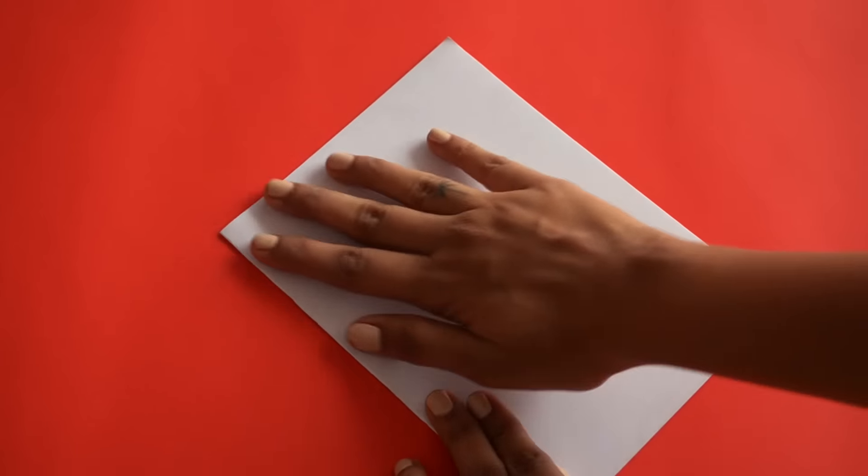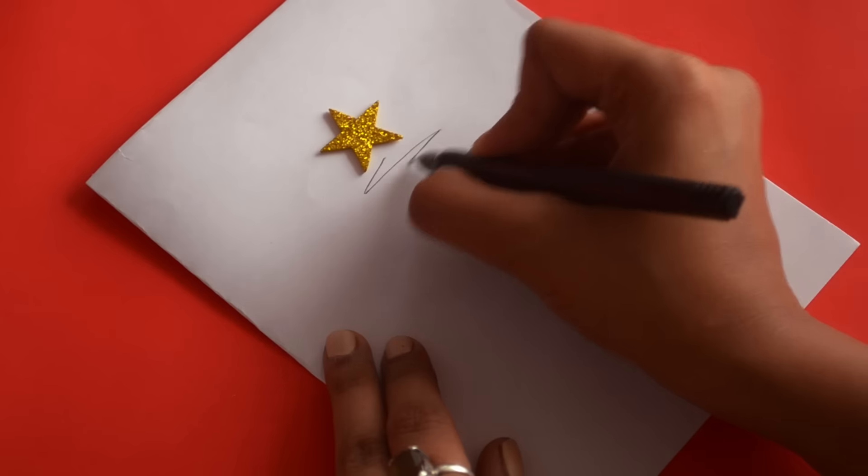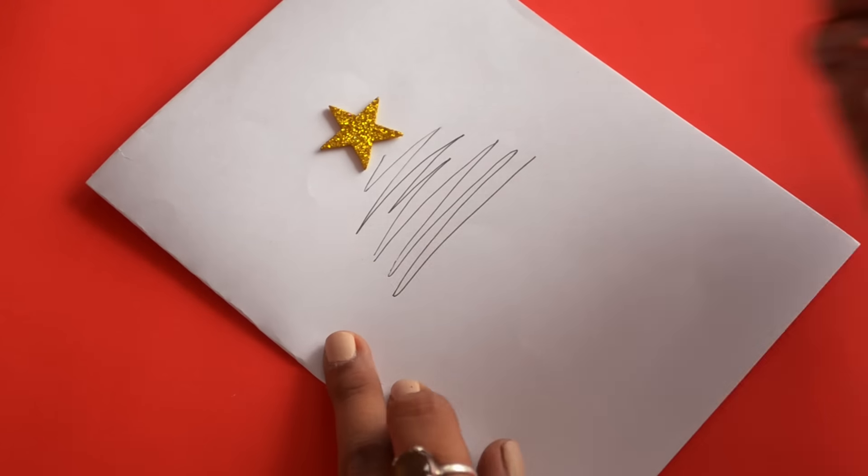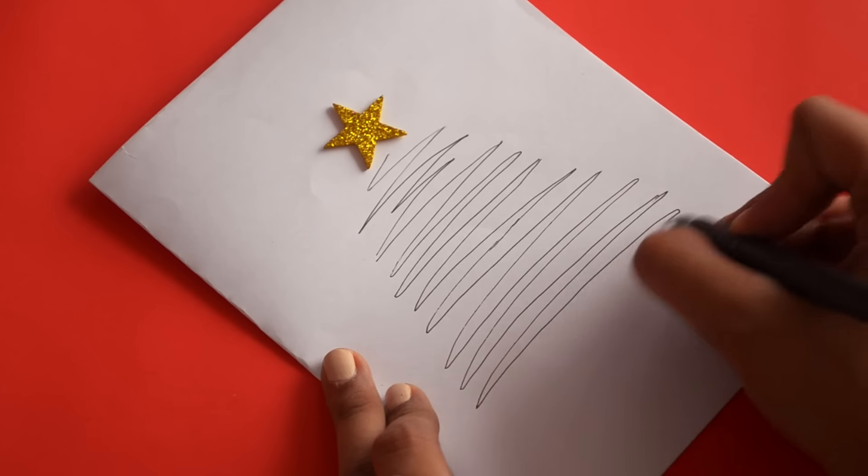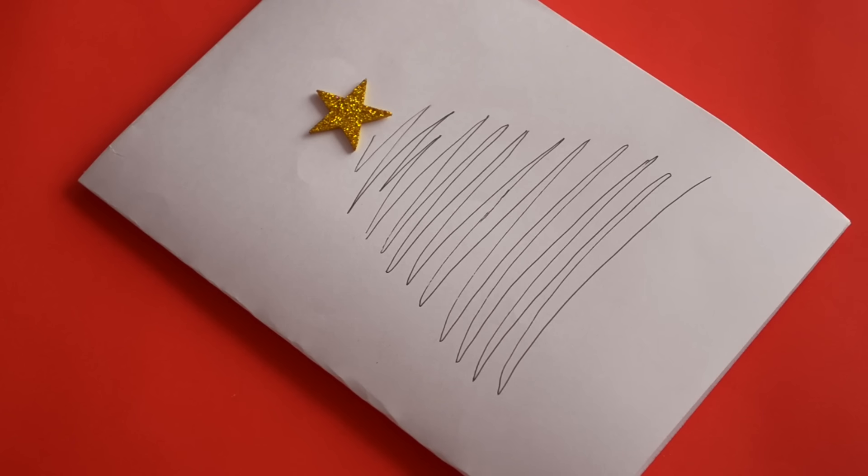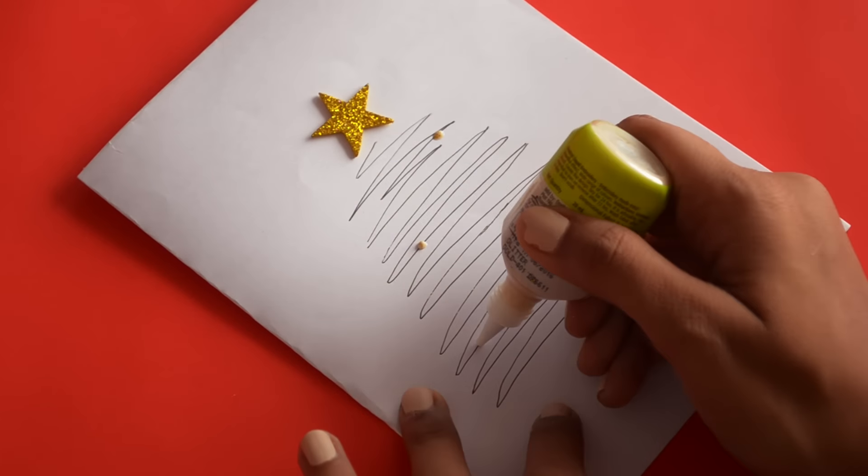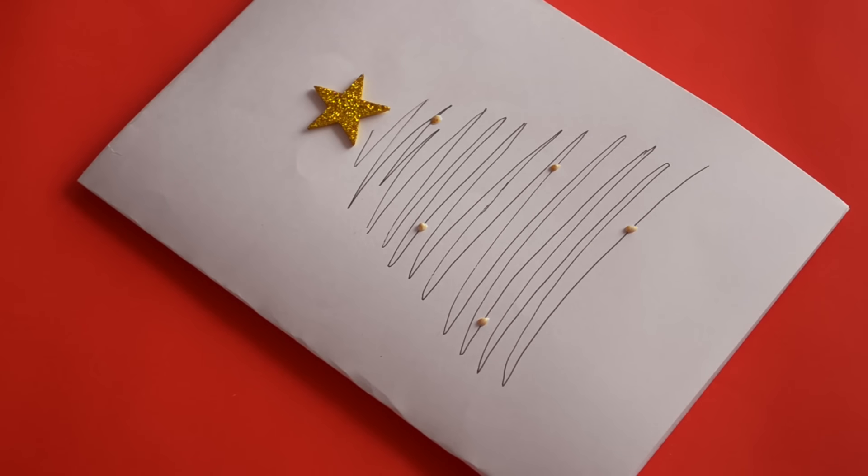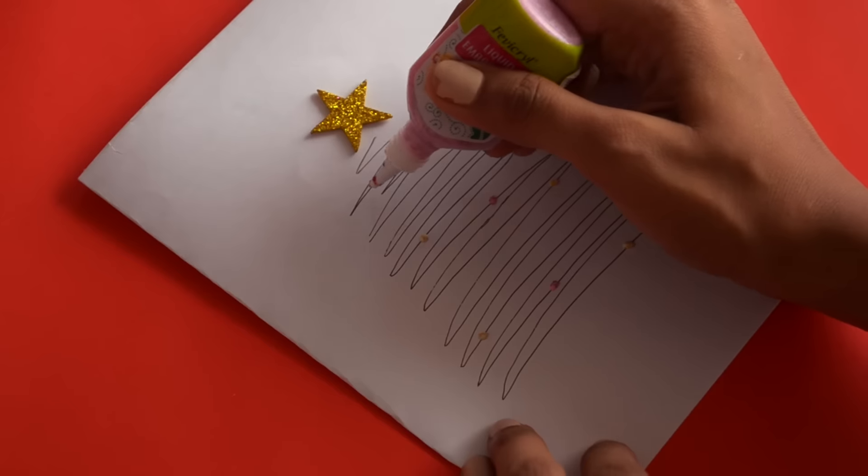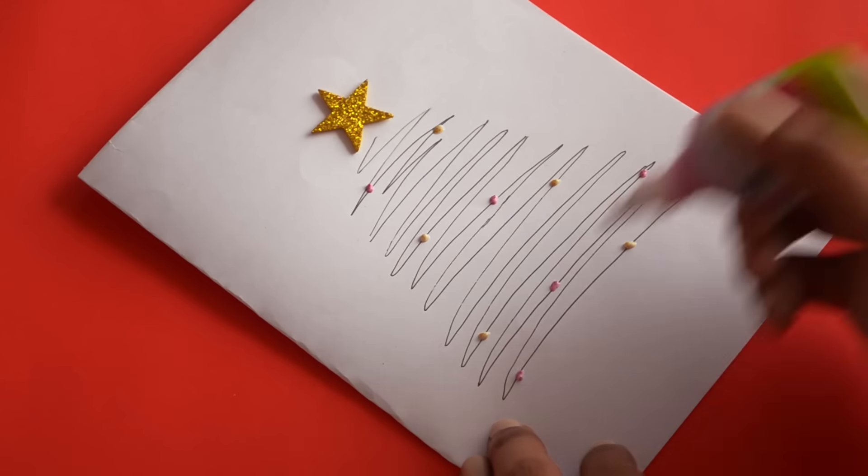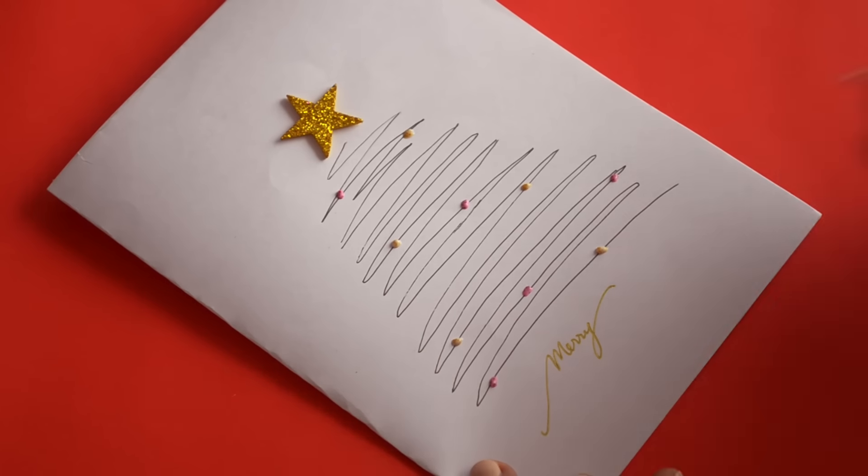For the first card I used a white A3 size card paper and folded it into half. Then I stuck a gold star on the paper and then scribbled in downward motion to make the Christmas tree. To decorate the tree I used a Fevicryl liquid embroidery tube which then dries up and looks all glittery. And then I wrote Merry Christmas with a gold pen and that's it.